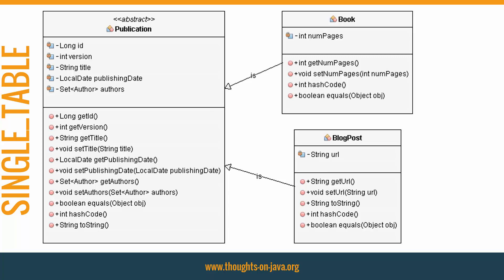The Publication entity is the superclass of the Book and BlogPost entities. The Publication entity defines the mapping of all shared attributes, like the id as a generated primary key, the title as a simple string, the publishing date as a local date, and the many-to-many relationship to the Author entity.